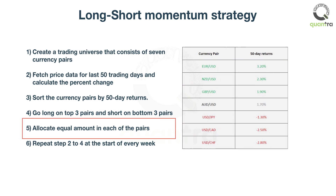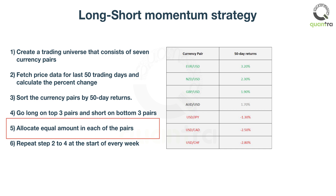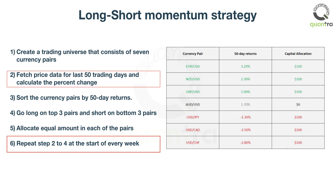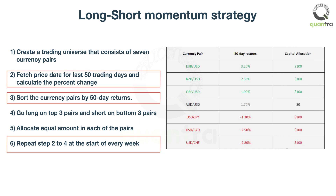Fifth, allocate an equal amount in each of the pairs. Sixth, repeat steps 2 through 4 at the start of every week.